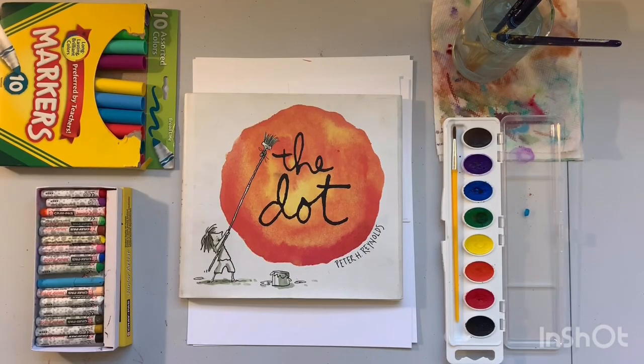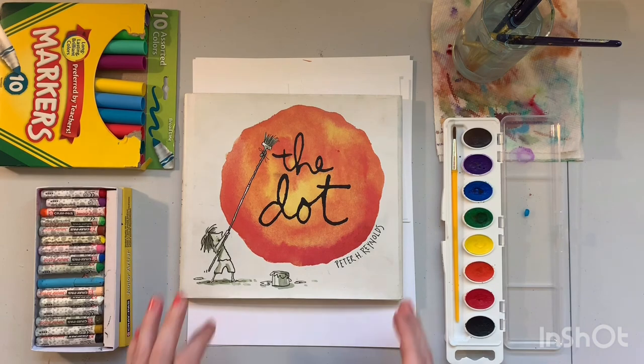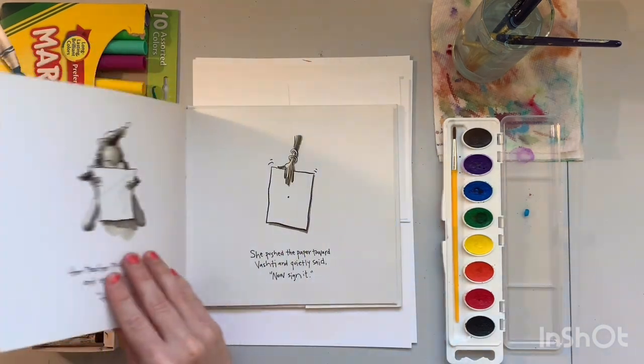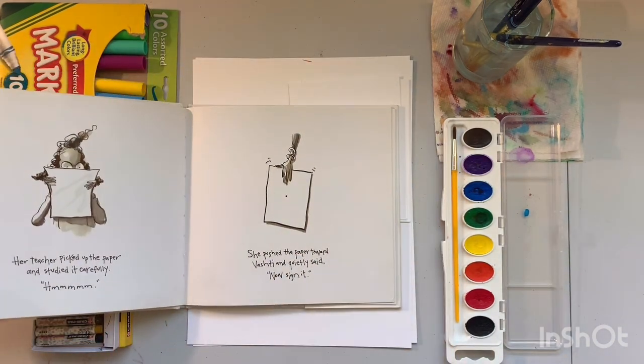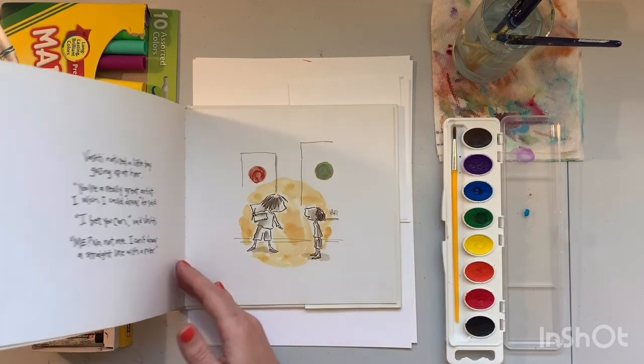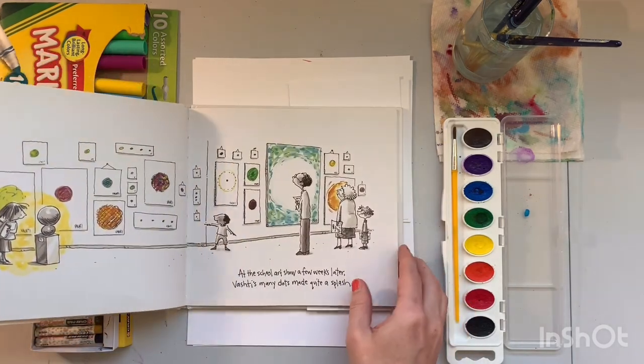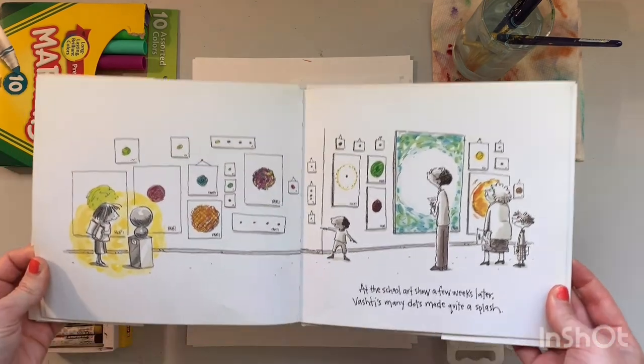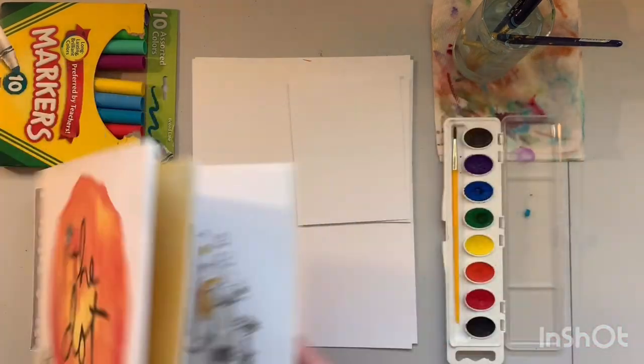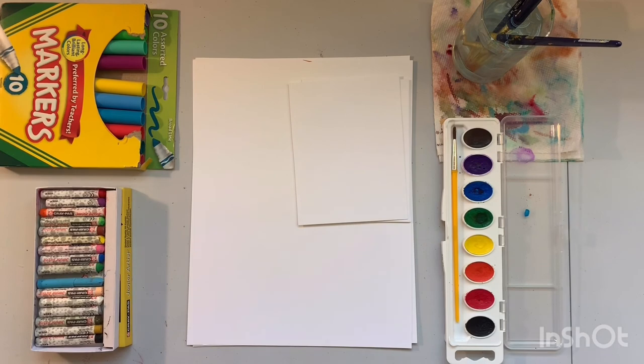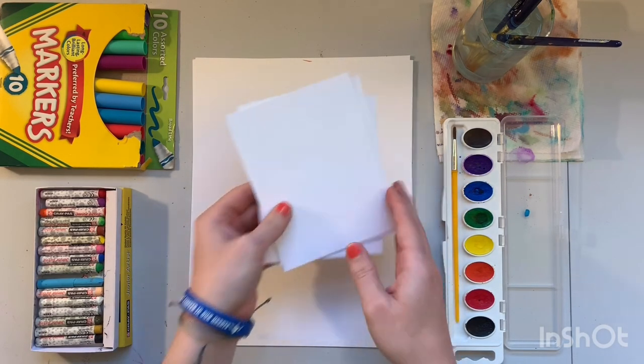Alright friends, we are going to start making our own artwork based off of the book The Dot. Remember in the book The Dot Vashti at first thinks that she isn't good at art or that she doesn't know what to draw or can't come up with any ideas. But then her art teacher encourages her just to make a mark on the paper.